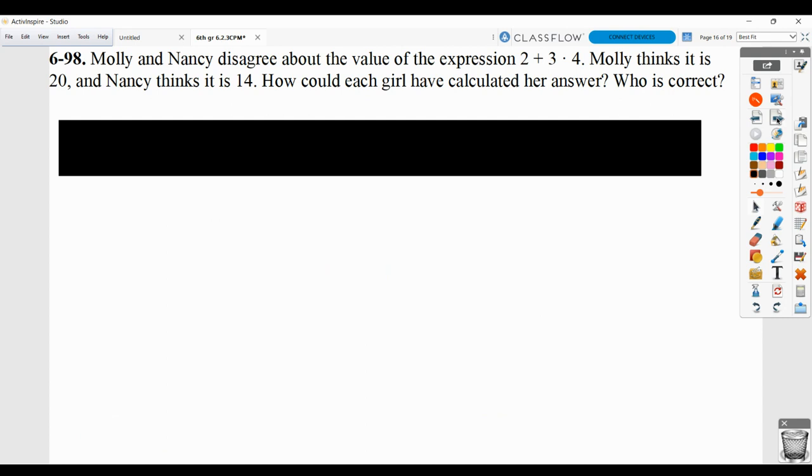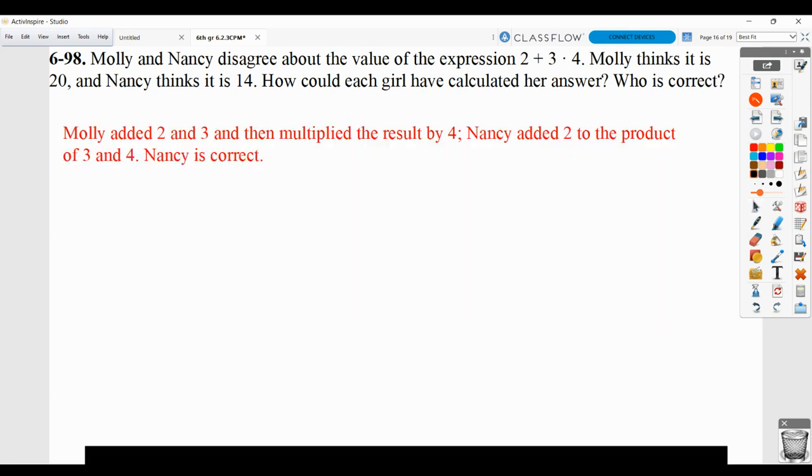Molly and Nancy disagree about the value of 2 plus 3 times 4. Molly thinks it's 20. Nancy thinks it's 14. How did they calculate their answers? Who's correct? Molly must have added the 2 plus 3 and then multiplied that by 4. So then we'd get 5 times 4 is 20. Nancy added 2 to the product of 3 and 4. So she took 3 times 4 first, then added 2. Nancy's correct because she used PEMDAS or order of operations. You need to multiply before you do addition.